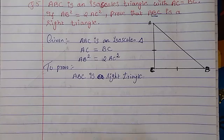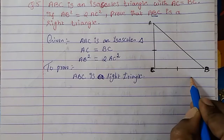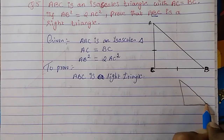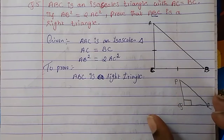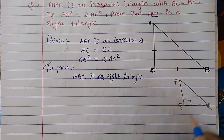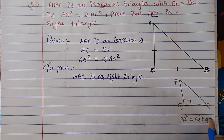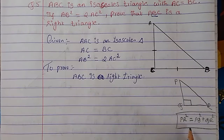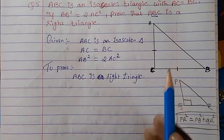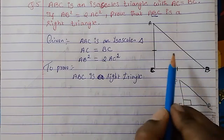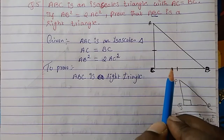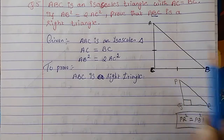When do we say it is a right triangle? According to Pythagoras theorem, for example in triangle PQR, we say it is a right angle triangle when the hypotenuse PR square is equal to PQ square plus QR square. So here we have to prove that AB square is equal to AC square plus BC square. If we prove that, then we can say this is a right angle triangle, and for that we apply Pythagoras theorem.